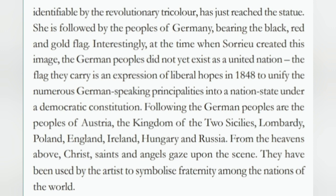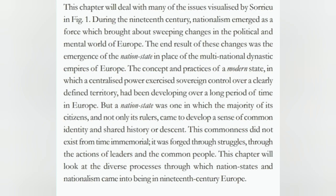The flag they carry is an expression of liberal hopes in 1848 to unify the numerous German-speaking principalities into a nation-state under a democratic constitution. Following the German peoples are the peoples of Austria, the Kingdom of the Two Sicilies, Lombardy, Poland, England, Ireland, Hungary, and Russia. From the heavens above, Christ, saints, and angels gaze upon the scene, symbolizing fraternity among the nations of the world. This chapter will deal with many of the issues visualized by Sorrieu in Figure 1.